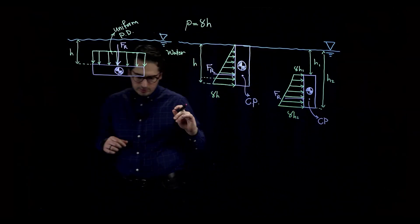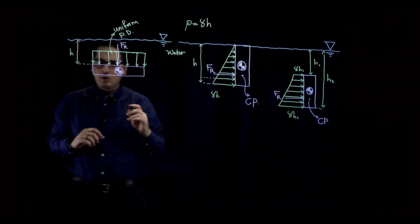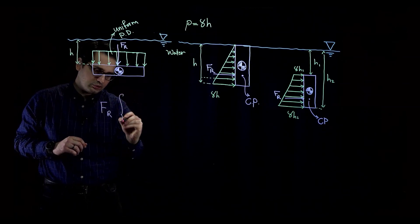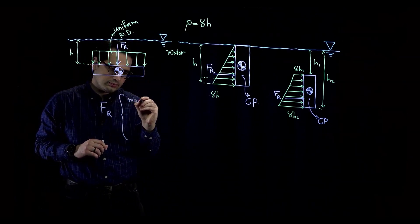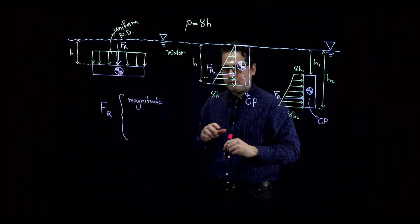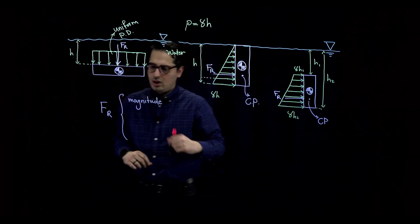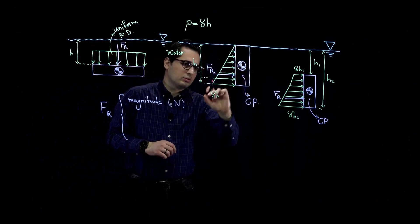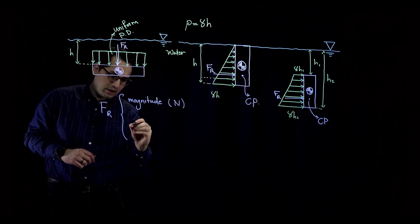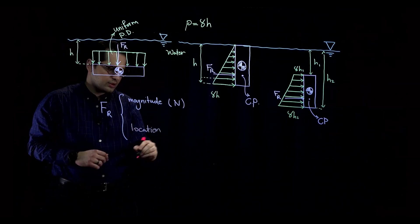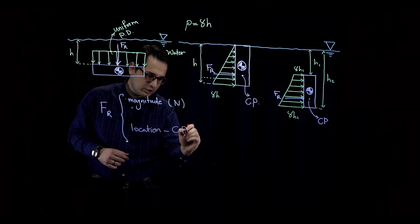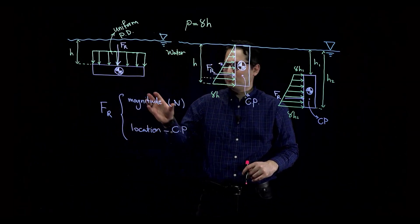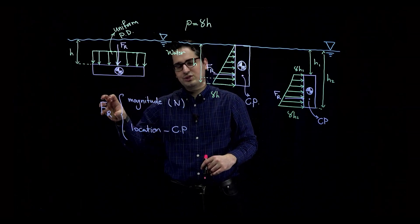To wrap up, when it comes to the resultant force, we are going to learn how to calculate two things. One is the magnitude — how large the force is, usually in Newtons. The other is the location — the position of the center of pressure for different problems. Over the next couple of minutes, I'll show you how to calculate the magnitude of the force and the location where the resultant force is applied.